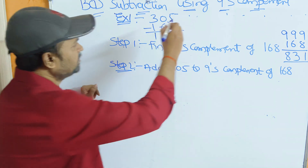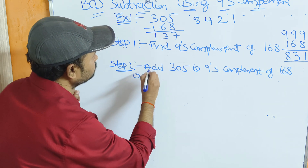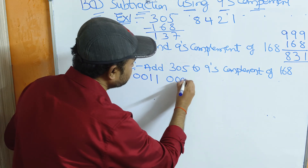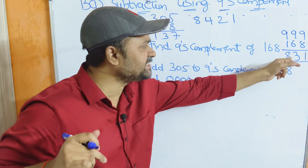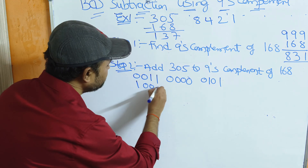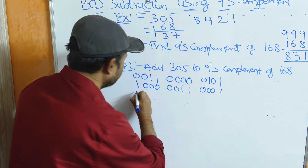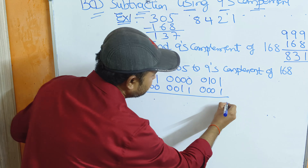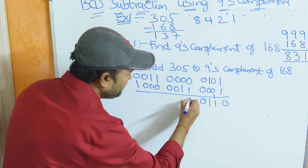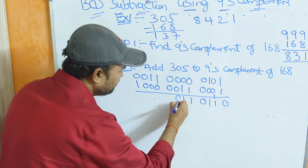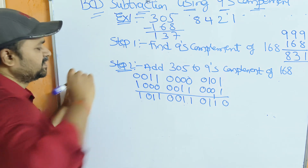How do we represent 305 in BCD notation? We use 8421 notation. So 3 is 0011, 0 is 0000, 5 is 0101. The 9's complement of 168 is 831: 8 is 1000, 3 is 0011, 1 is 0001. Now let us do the addition operation: 1+1=0 carry 1; 0+0+1=1; 1+0=1; 0+0=0; 0+1=1; 0+1=1; 0+0=0. Step 2 is over.